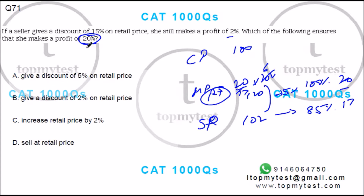Now you want to make a profit of 20%, so sell a 100 rupee item for 120, which means no discount on the retail price. Option D is your correct choice.